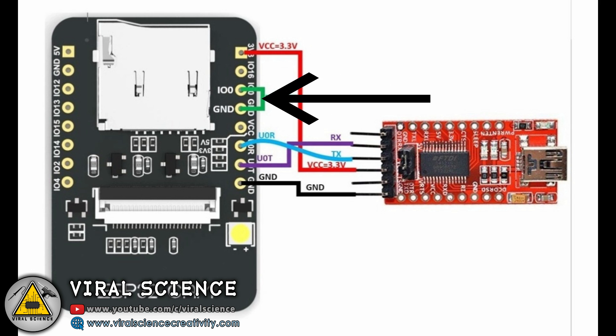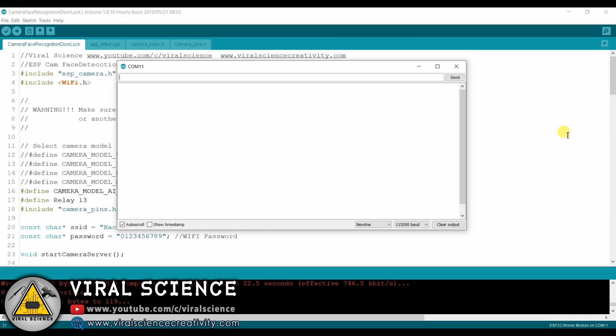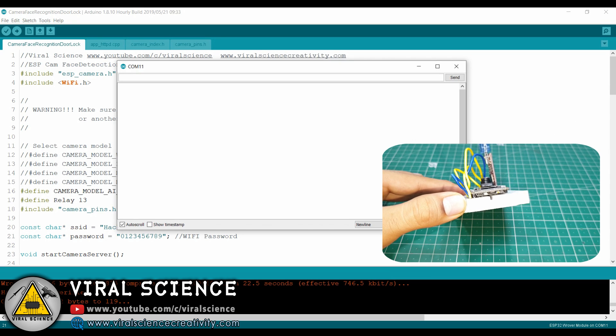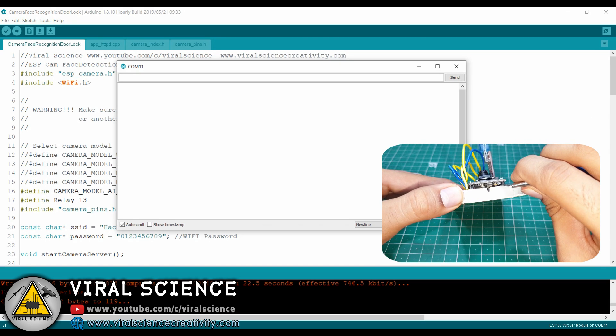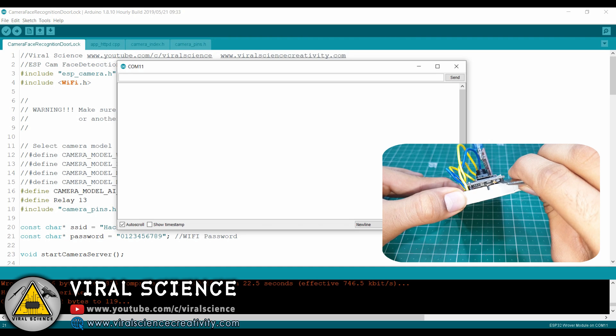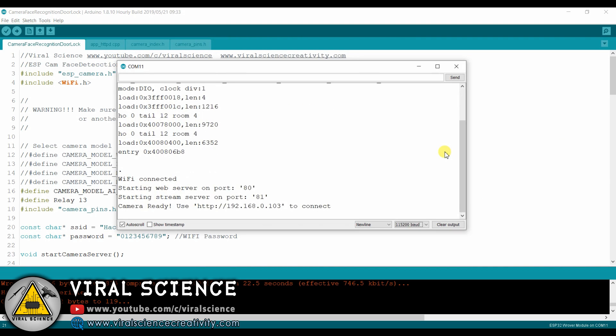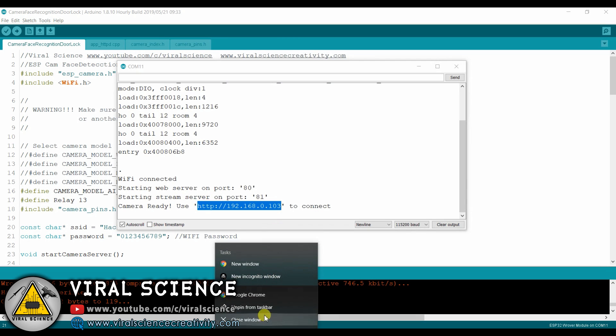After you finish uploading remove this jumper cap which is from IO0 and ground. Now select the baud rate and again press the reset button. Now you will get an IP address link, copy it and paste it in your browser and open it.